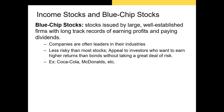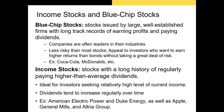Next we have blue chip stocks — stocks of large, well-established firms with long track records of earning profits and paying dividends. The stocks on the Dow Jones Industrial Average are almost universally considered blue chip stocks. Really any leader in its industry that's profitable and has name recognition is considered a blue chip stock. Examples include Coca-Cola, McDonald's, Apple, and Google.